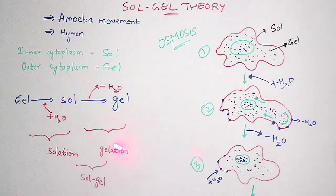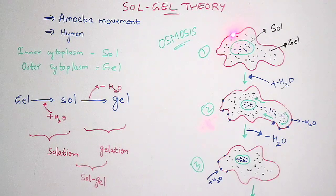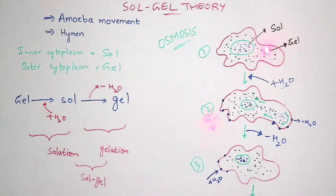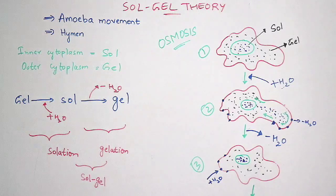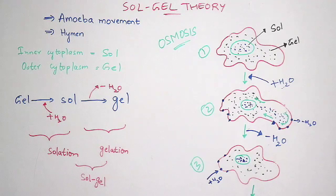Solation and gelation together is called sol-gel transformation, and the same phenomenon applies to amoeba locomotion via Pseudopodia. In the normal position of the amoeba, plasma sol is in the inner cytoplasm and plasma gel is in the outer cytoplasm. When the amoeba absorbs water molecules, one of the Pseudopodia gets protruded out. When more water is taken in, all molecules move forward toward the Pseudopodium such that it gets bulged and extended outward.